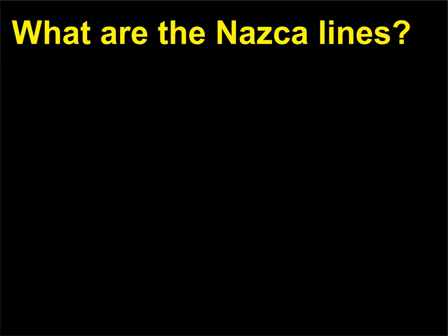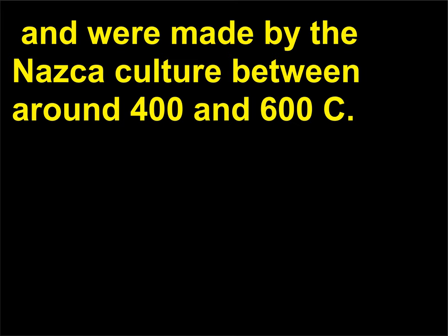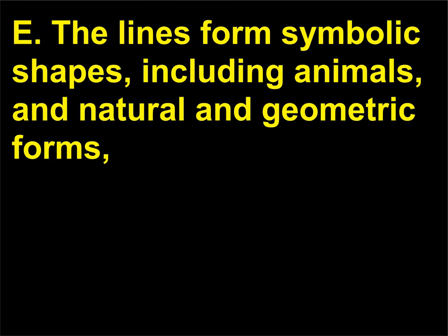What are the Nazca Lines? The Nazca Lines are monumental geoglyphs carved lightly into the earth in southern Peru, made by the Nazca culture between around 400 and 600 CE. The lines form symbolic shapes, including animals, and natural and geometric forms.